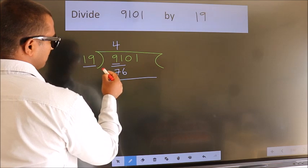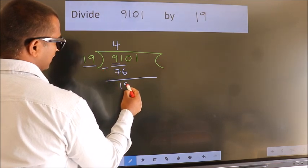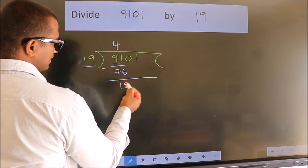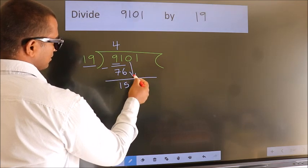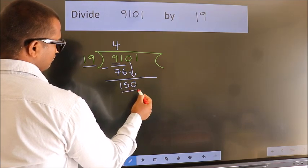Now, we should subtract. We get 15. After this, bring down the beside number. So, 0 down. So, 150.